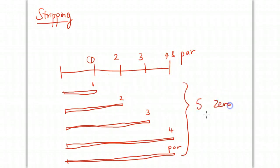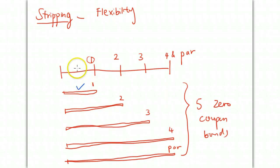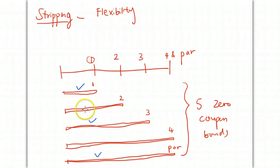Stripping provides flexibility to an investor. Suppose an investor only wants to receive one particular coupon payment. If getting the entire bond feels too heavy, he or she might just choose a specific strip — or perhaps a combination of strips. So it provides a kind of 'a la carte' way of deciding which payments the investor wants.